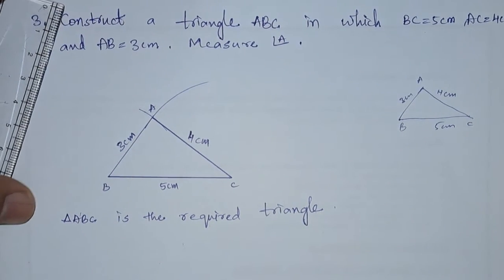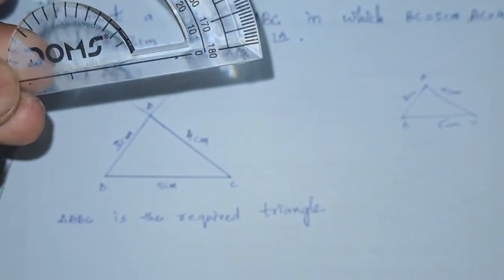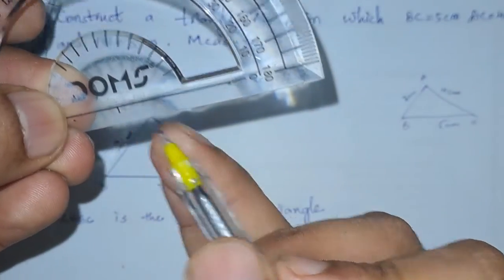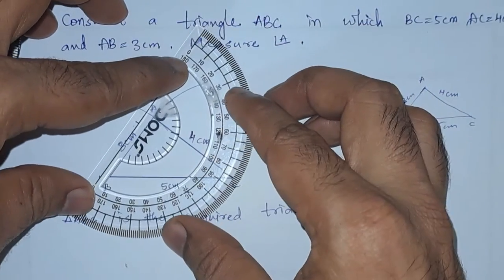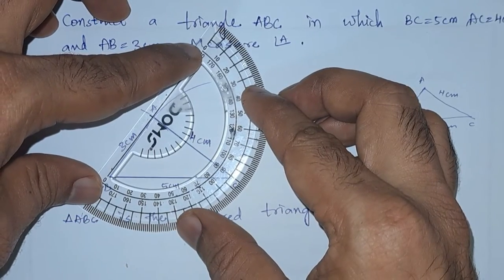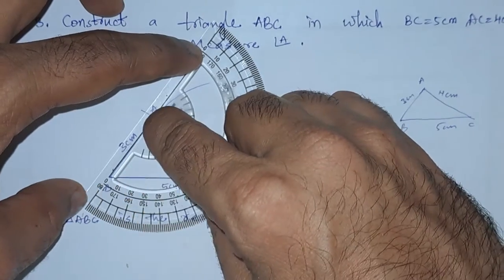For that we need the protractor. You can see the middle point here. This point should be placed at A. Let us put this point here over A, and this line should coincide with AB.